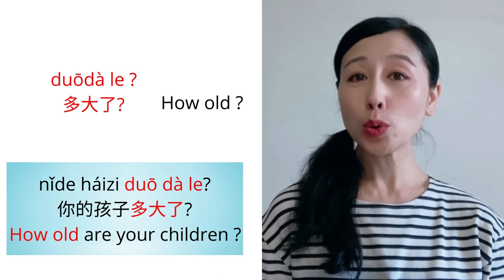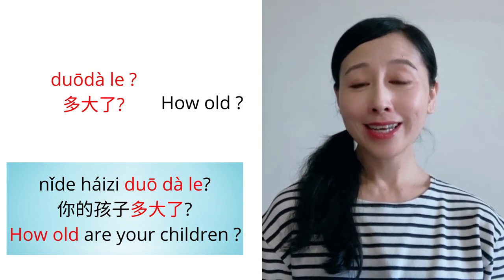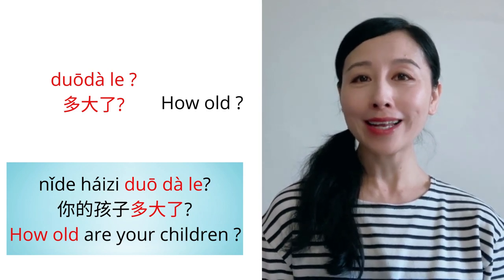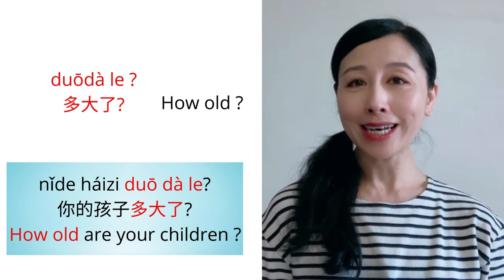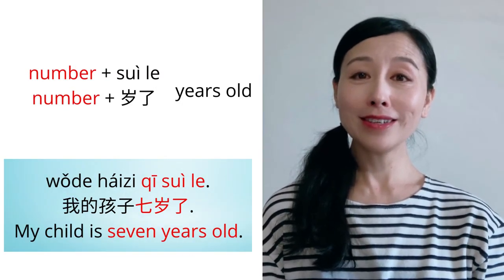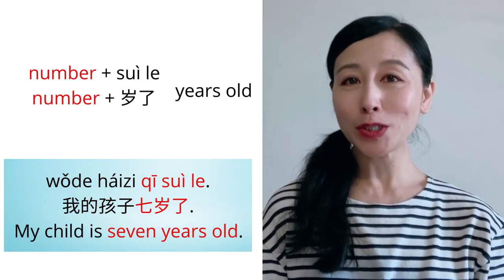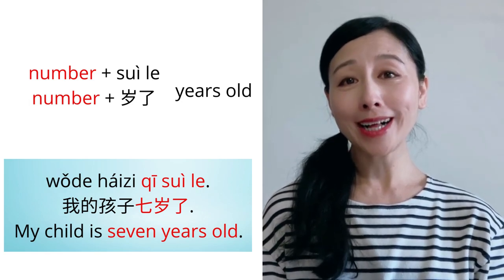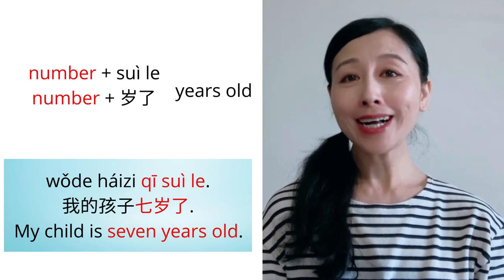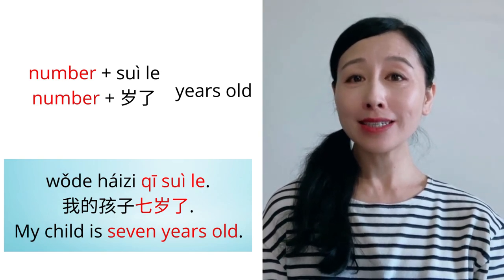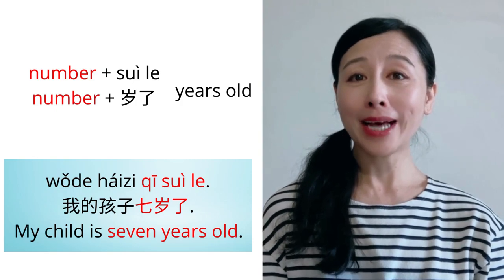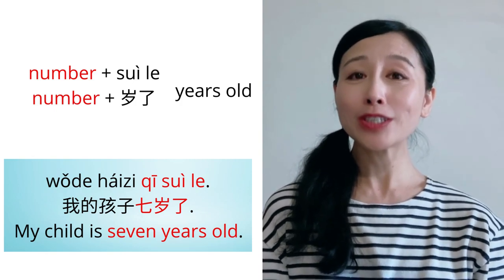You can also ask: How old are your children? 你的孩子多大了? 多大了 means 'how old?' You can answer: My child is seven years old — 我的孩子七岁了. Use a number plus 岁了 to express years old.